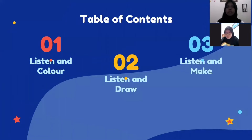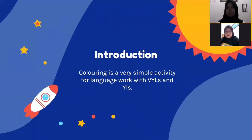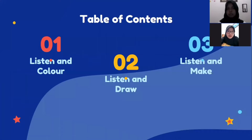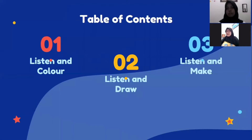And the children have something to take home at the end of class. Next slide. Table of contents. First, we will explain about listen and color. Second, listen and draw. And third, listen and make.